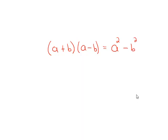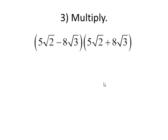Okay, let's try to take advantage of this. Multiplying two conjugates, 5 square root of 2 minus 8 square root of 3 times 5 square root of 2 plus 8 square root of 3. By what we just saw, we can multiply the first term by the first term. 5 times 5 is 25, and the square root of 2 times the square root of 2 is 2.